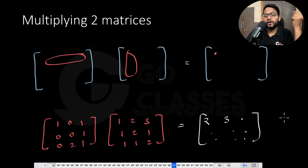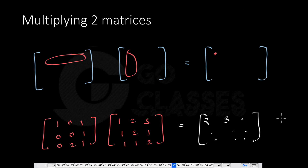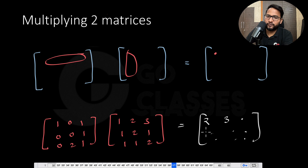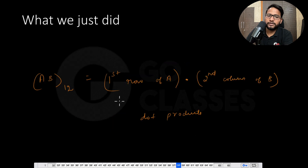But a more interesting question is: this is what we've already seen in elementary school. Can we multiply two matrices in any other way that is actually useful from a linear algebra perspective? What we just did is basically to get the one-two element — meaning first row, second column — we multiplied the first row of A by the second column of B.